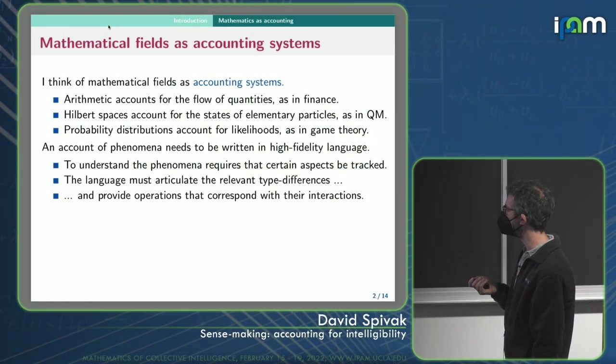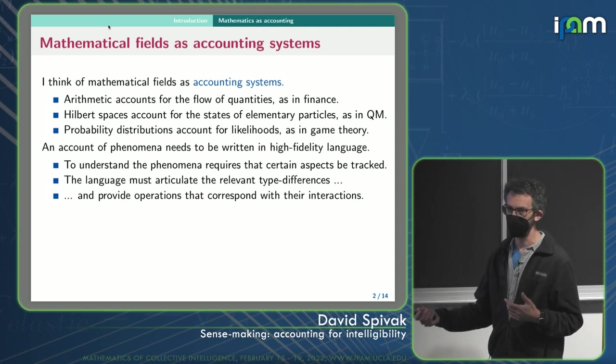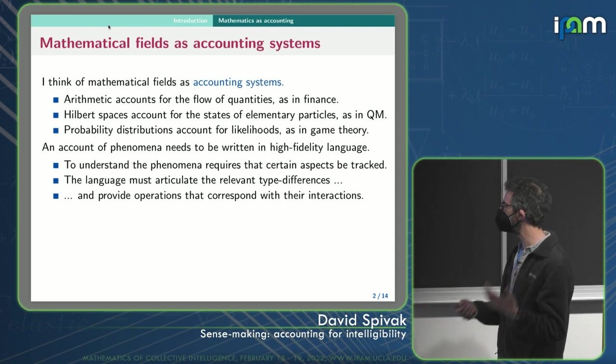And so you want to articulate the relevant type differences. So if I have shapes and numbers, those are of different types. And so the accounting system should kind of say, that's not a dollar figure. That's a number of widgets or whatever, and be able to account for the different types.